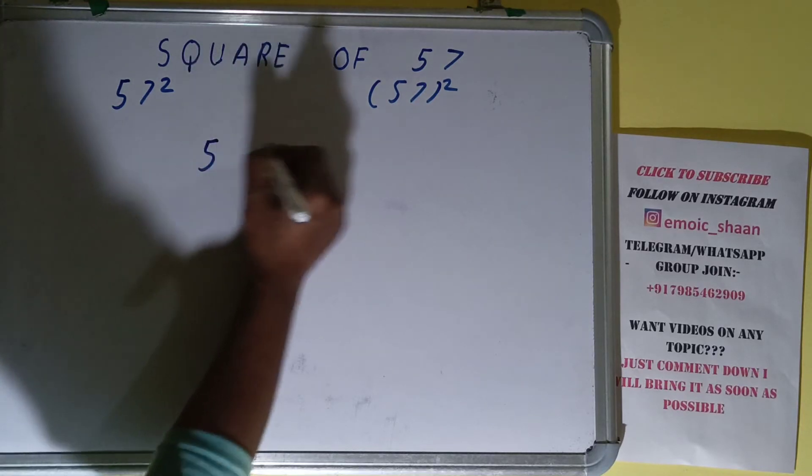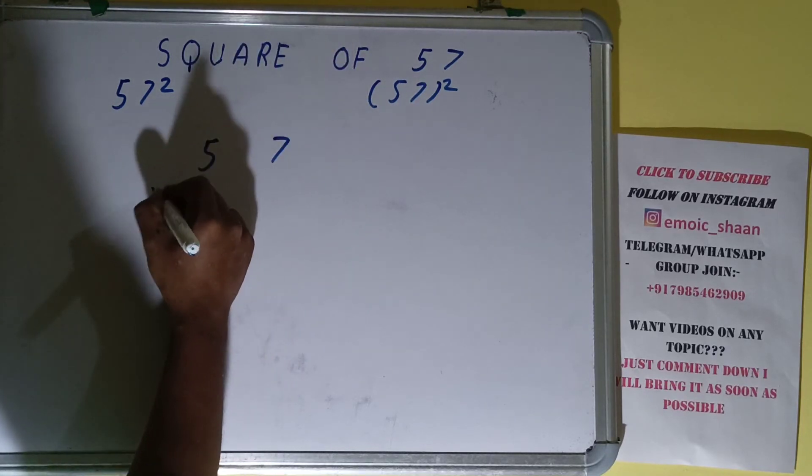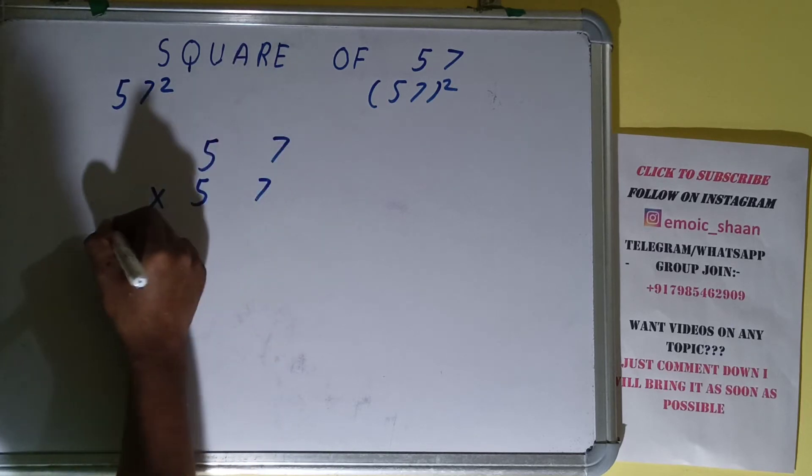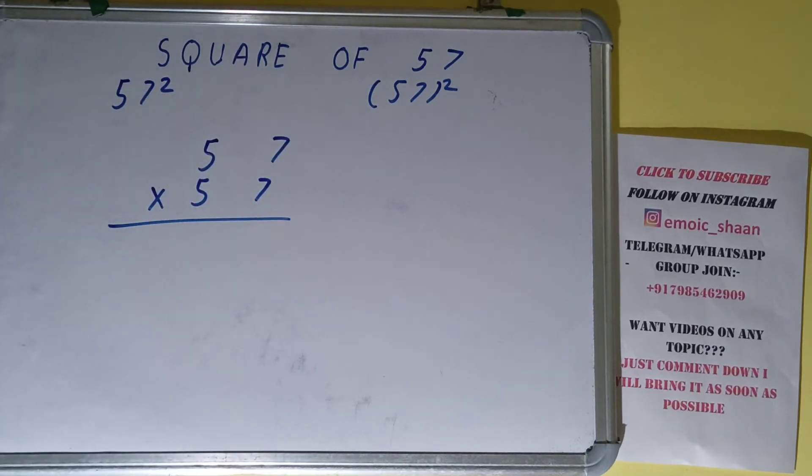To find the square of it, we need to multiply it by itself, that is by 57, and what we'll get, let's see.